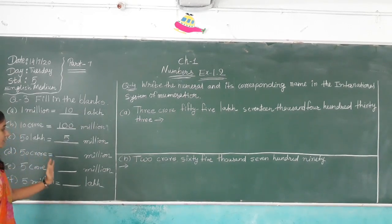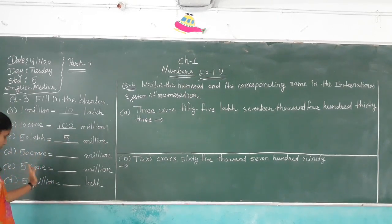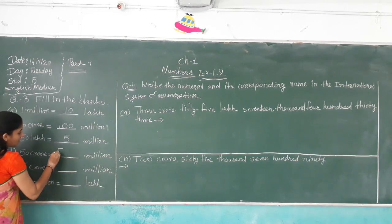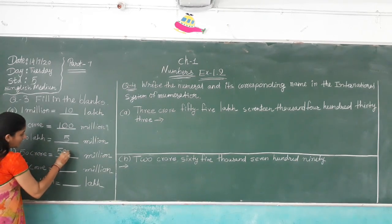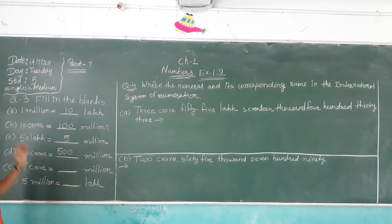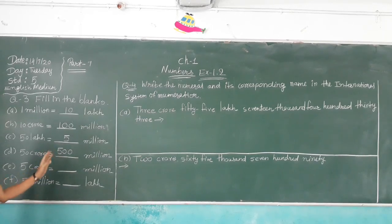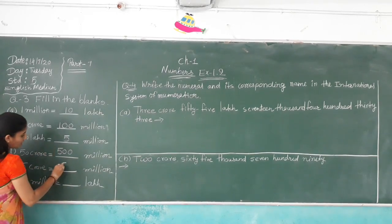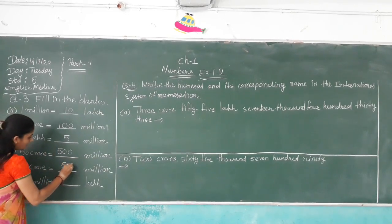50 crore is equal to how many millions? 50 crore is equal to 500 million. 5 crore is equal to blank million. 5 crore is equal to 50 million.